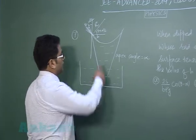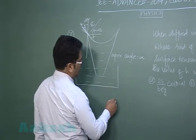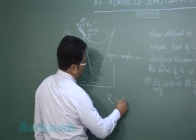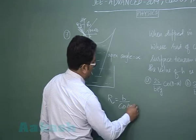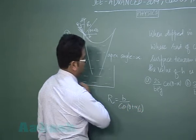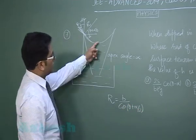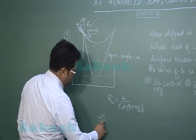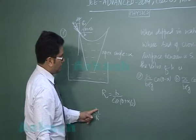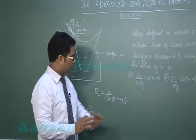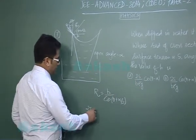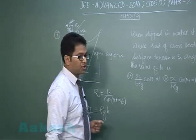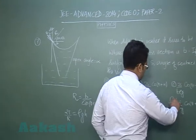Now I can very easily relate that r equals to b by cos theta plus alpha by 2. And now using the excess pressure formula 2t by r, where t is the surface tension, here it's s that hardly matters, will be equals to rho g h. And on solution you will get option number d.